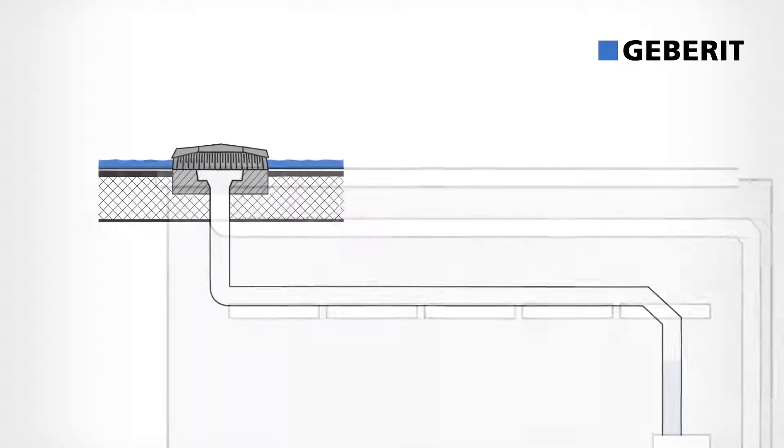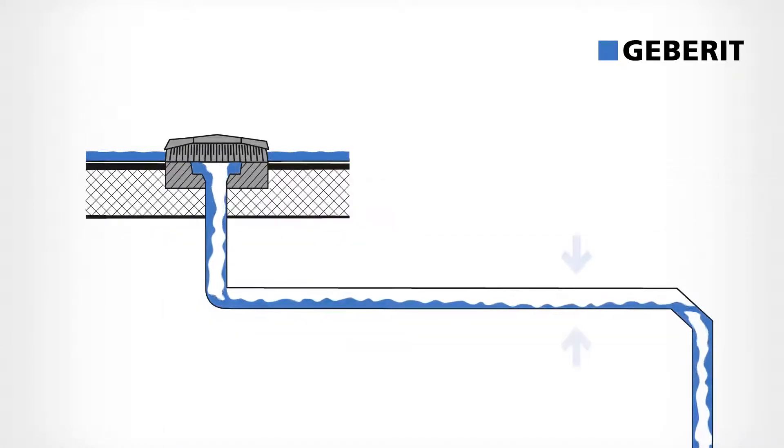This is how siphonic roof drainage works with Geberit Pluvia. Smaller pipe diameters, which fill completely in the event of heavy rain, result in a closed water column. The water is then suctioned off the roof with negative pressure.